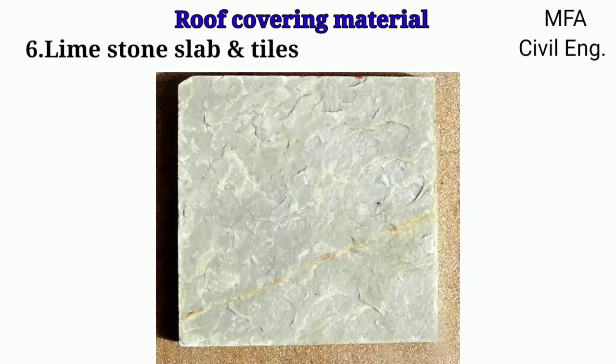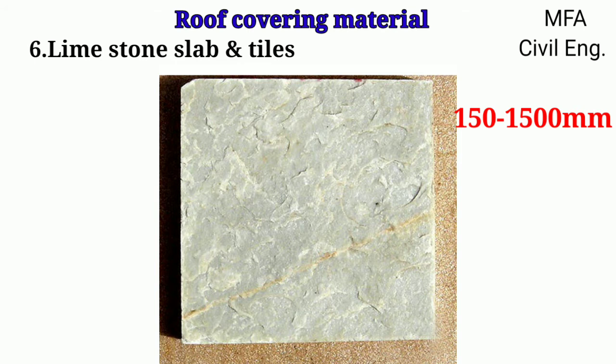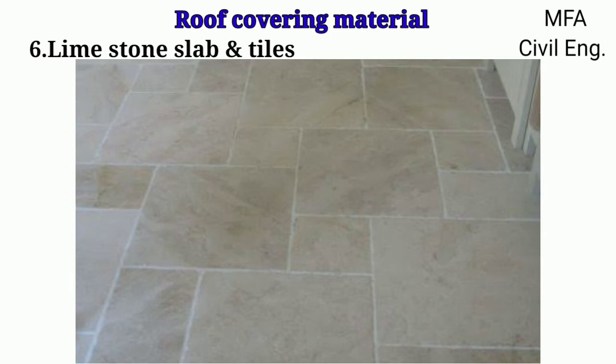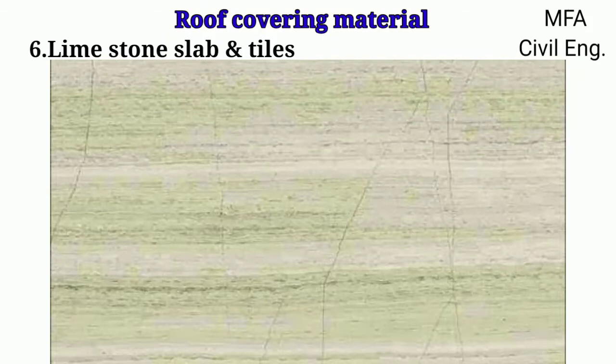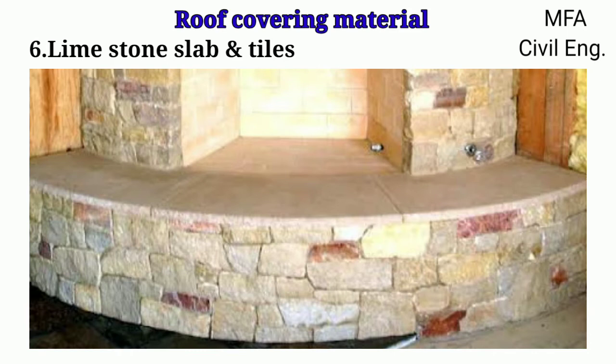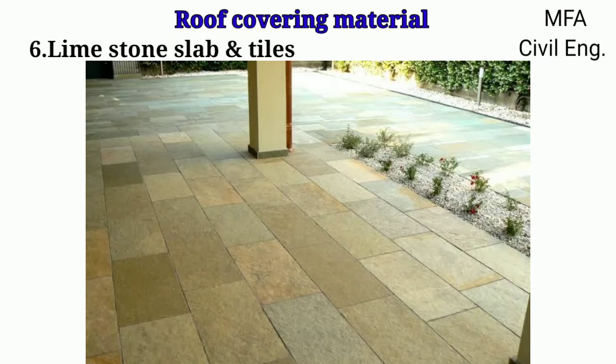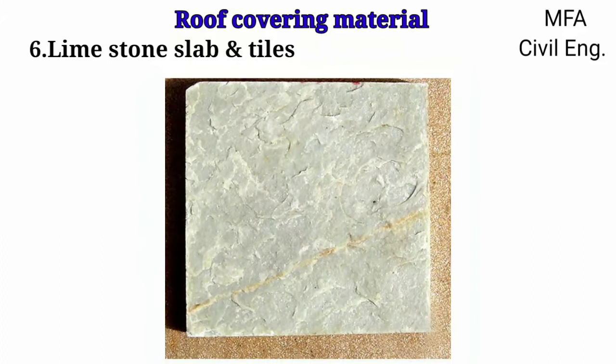Limestone slabs and tiles are available in lengths and breadths ranging from 150 mm to 1500 mm, and thickness ranging from 150 mm to 950 mm. When stones are used as tiles, they should be free from any cracks, flaws and soft veins, and should have a uniform thickness. Curvature of the stone slabs in any direction shall not be more than 5 mm. These stone slabs and tiles are commonly used in flooring and facing work. Water absorption is very less and they have high strength and are more durable.